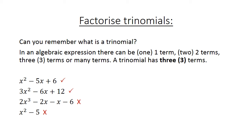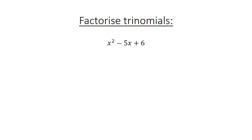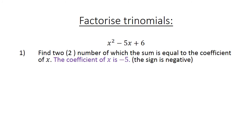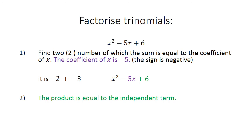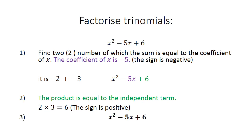Now we are going to factorize the trinomials. Take x squared minus 5x plus 6. First, find two numbers whose sum equals the coefficient of x, which is negative 5: that is negative 2 plus negative 3. The product must equal the independent term, which is plus 6: so 2 times 3 equals 6, and the sign is positive. Therefore: x squared minus 5x plus 6 equals x minus 2, in brackets, times x minus 3.